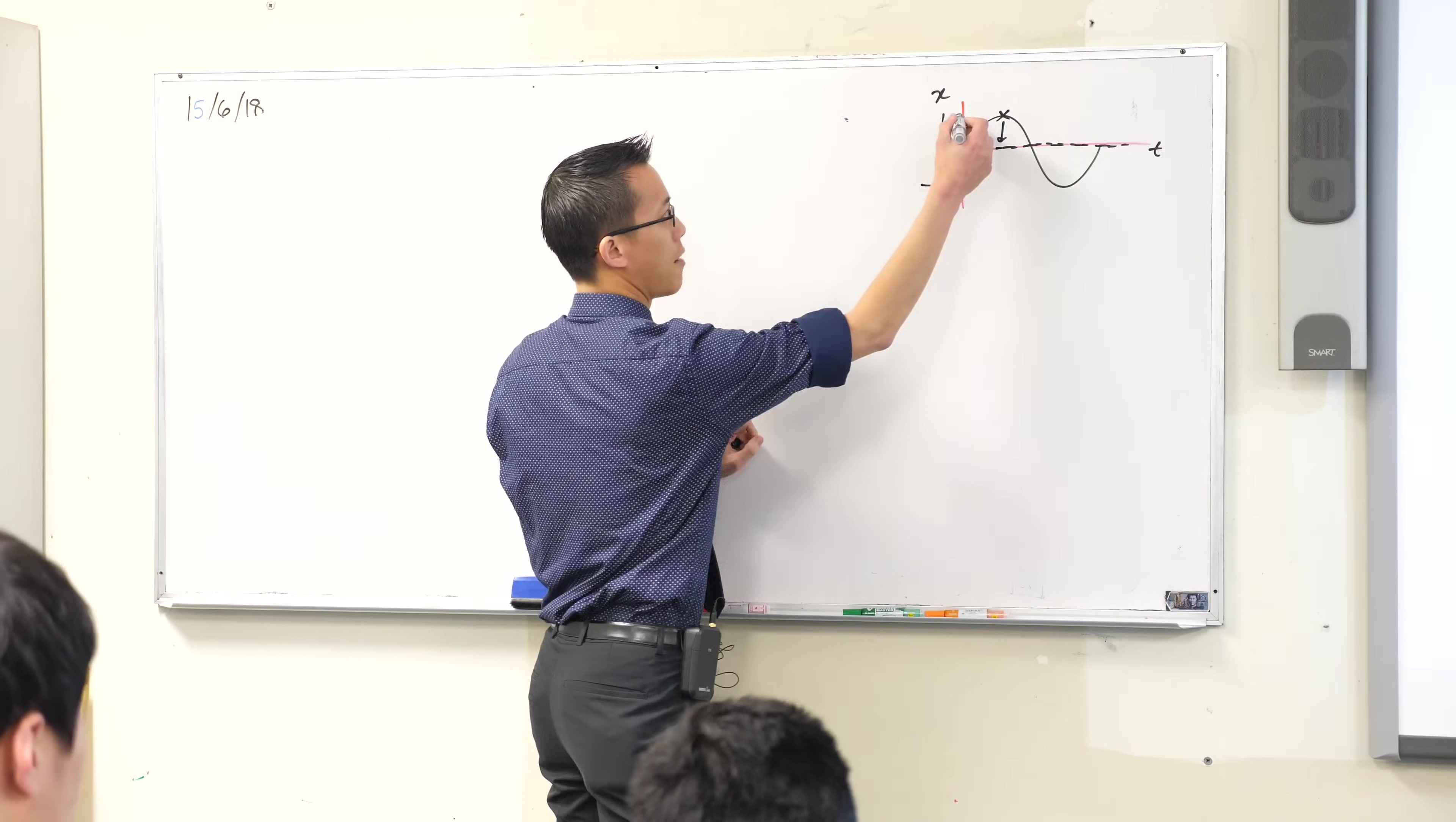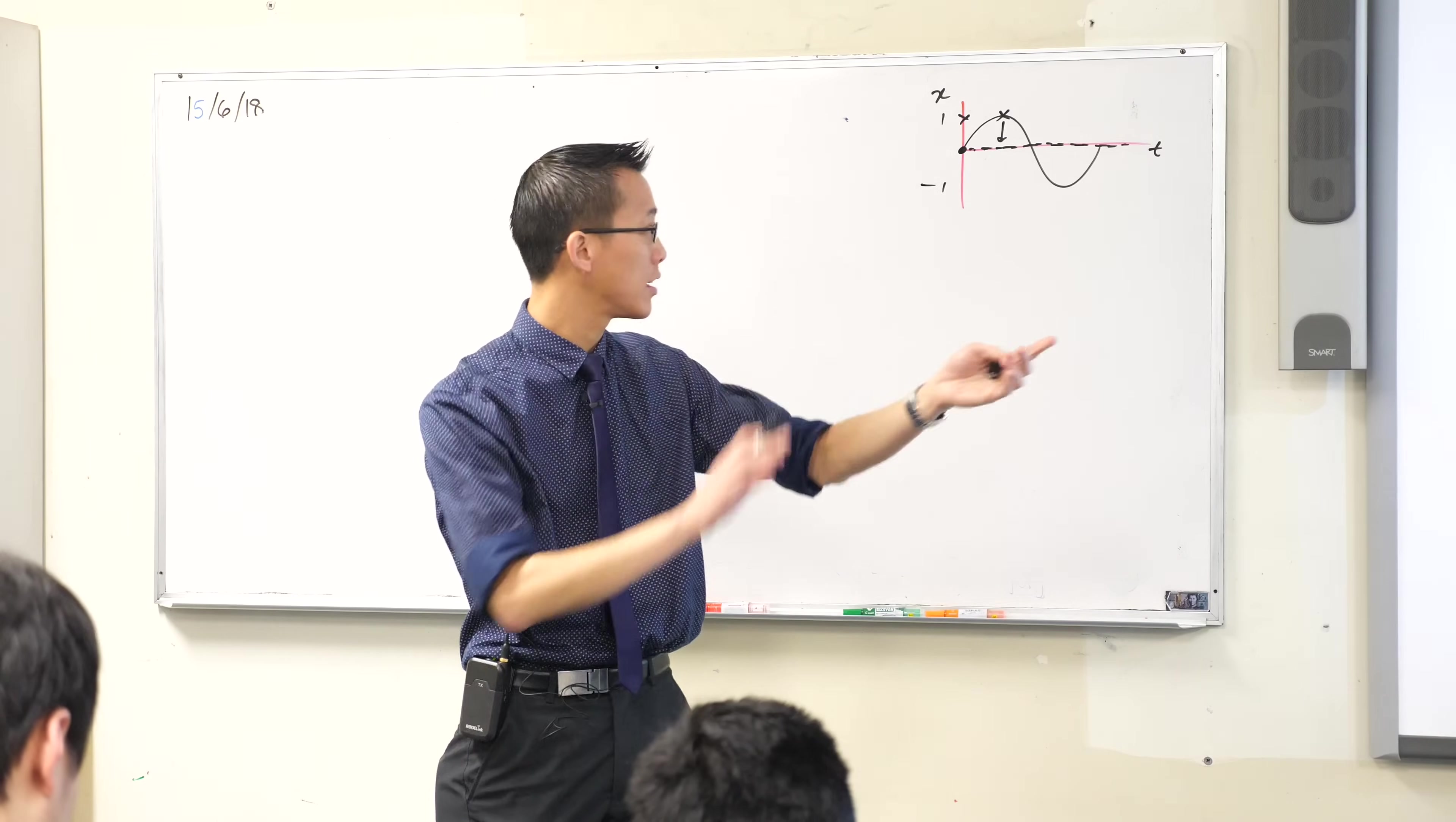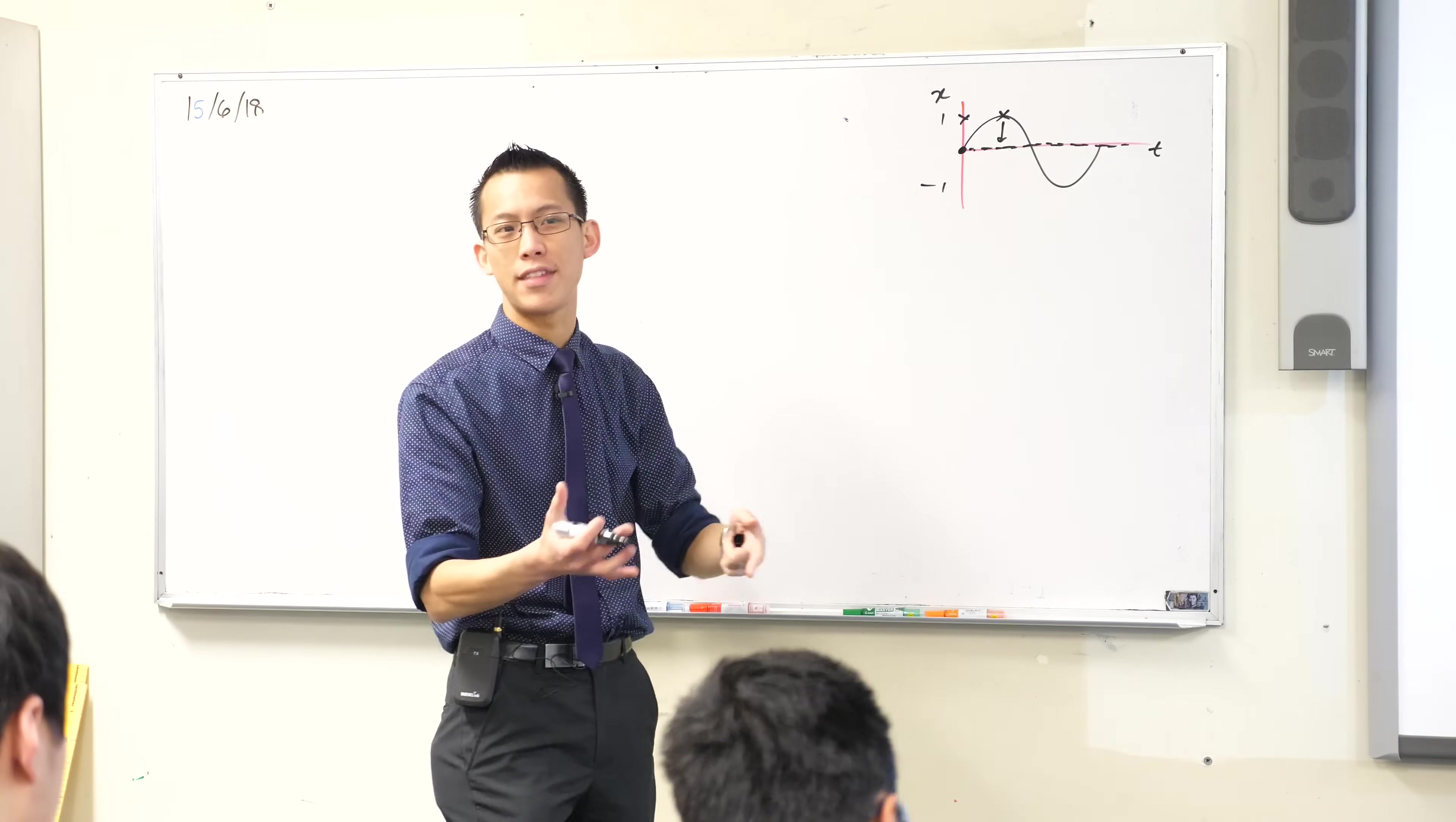If we weren't beginning at the origin, if we were beginning say up here, we would choose cosine because you can use either - you could use a phase shift to get you from here to there as we'll look at later, but you might as well use a function that just starts there anyway if that's what they tell you it does.